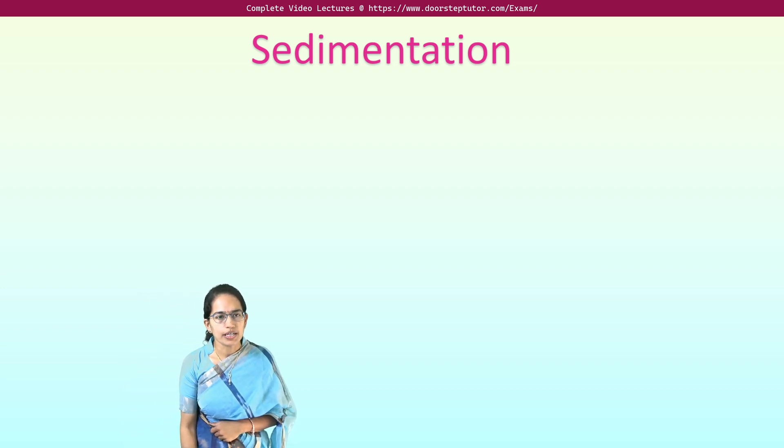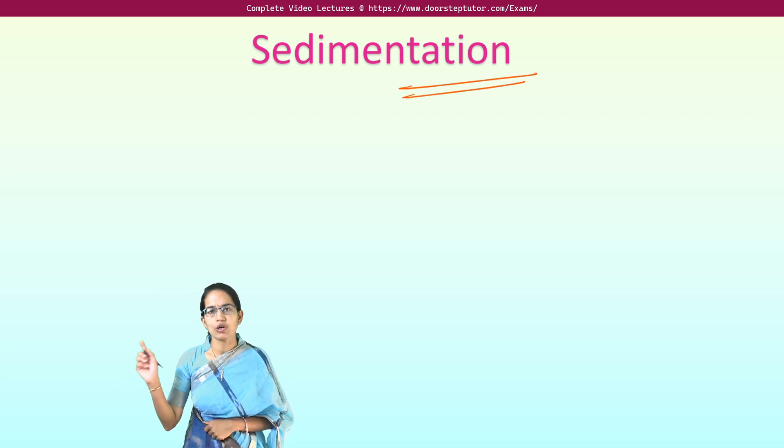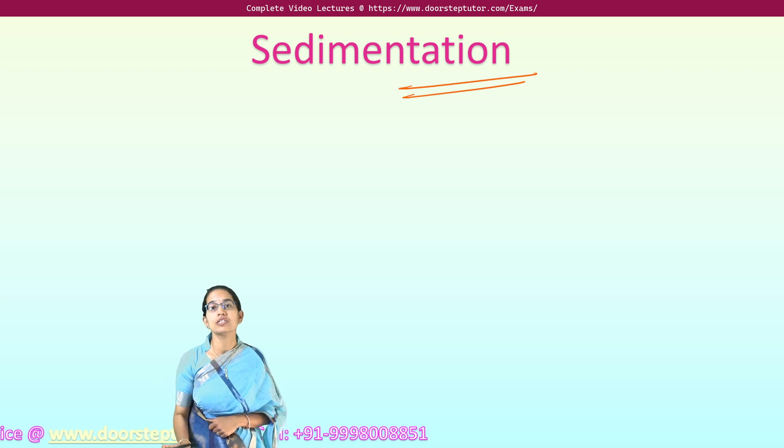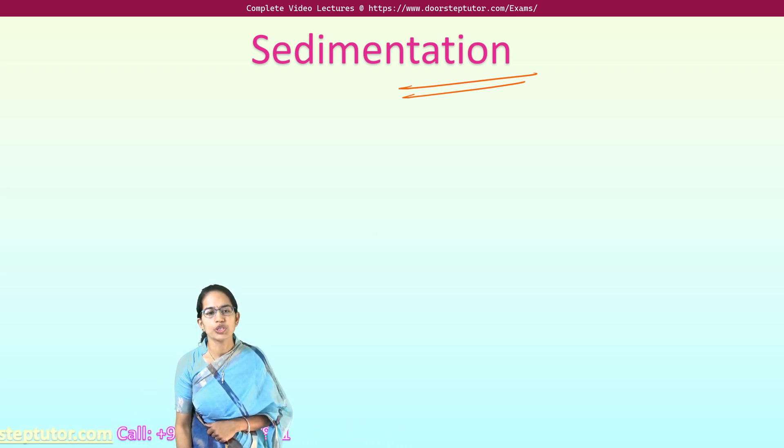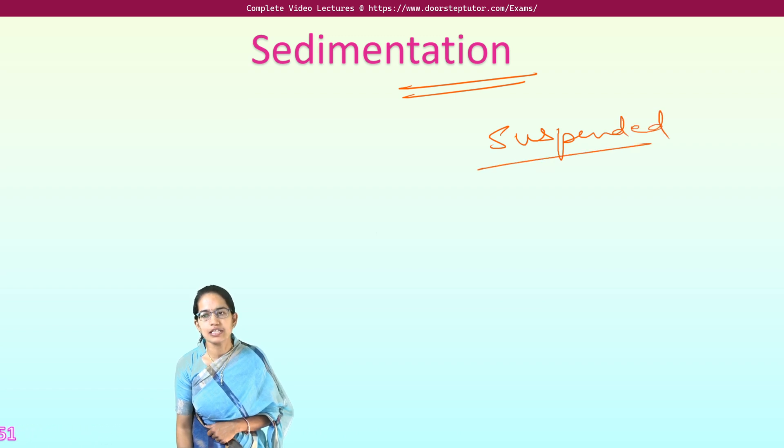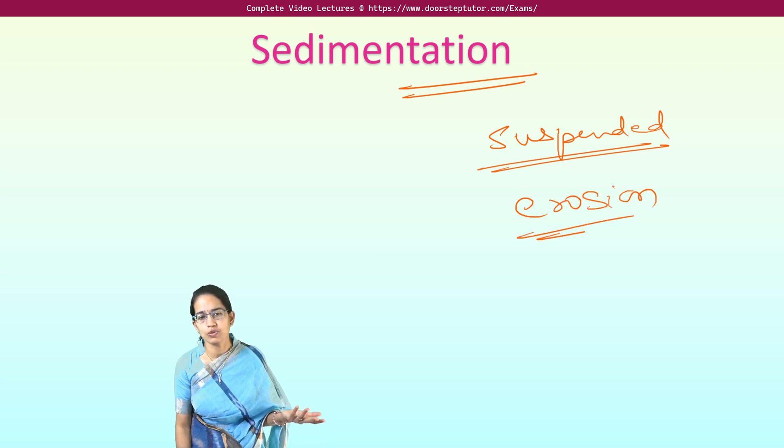When water passes through lake bodies, rivers, and into the oceans, it has suspended particles. These suspended particles are produced by erosion.